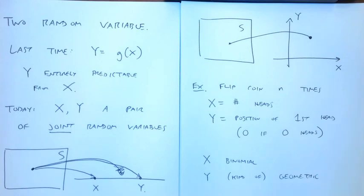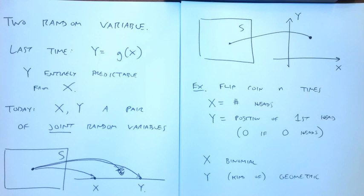Clearly there's a relationship between these random variables. If I got three heads, my Y has to be one, two, or three — it can't be zero, and it can't be four, five, or six. Knowing X tells me something about Y and vice versa. That means these two random variables are related, and we'll be able to explore whether they're independent, whether they're correlated, and so on.